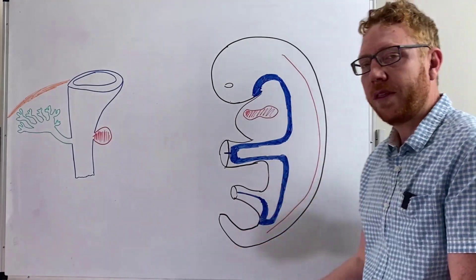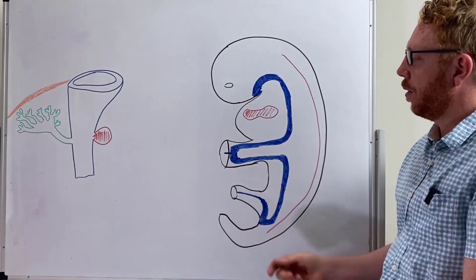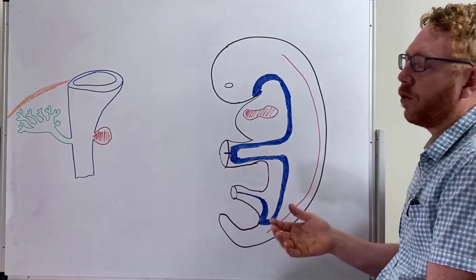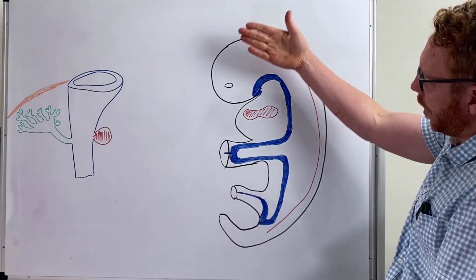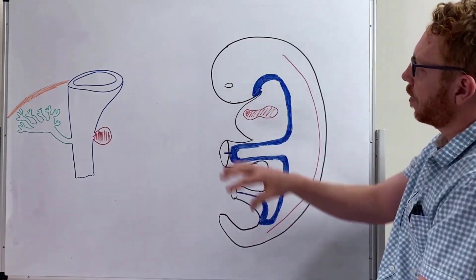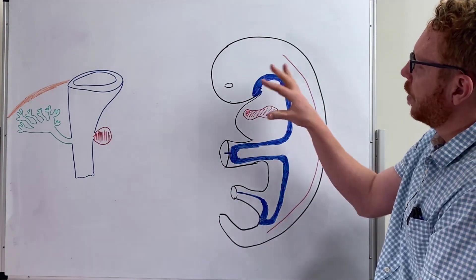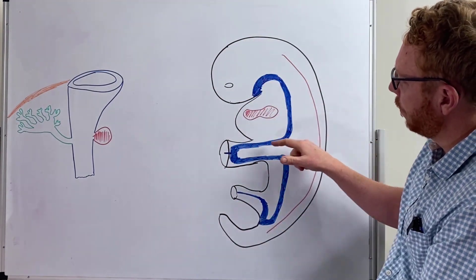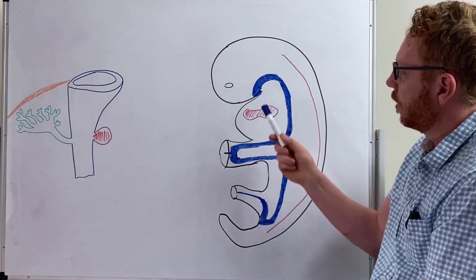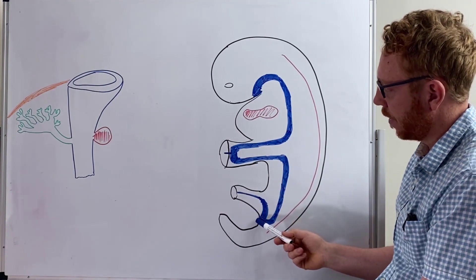So let's start with this particular image. We've got the embryo pretty early on, in the fourth or fifth week, and we're cutting the embryo in a sagittal section. Here's the head end, here's the tail end. What we're demonstrating here is this big blue tube, which is essentially the gut tube — you can see it start right at the mouth end and ending at the cloacal end.